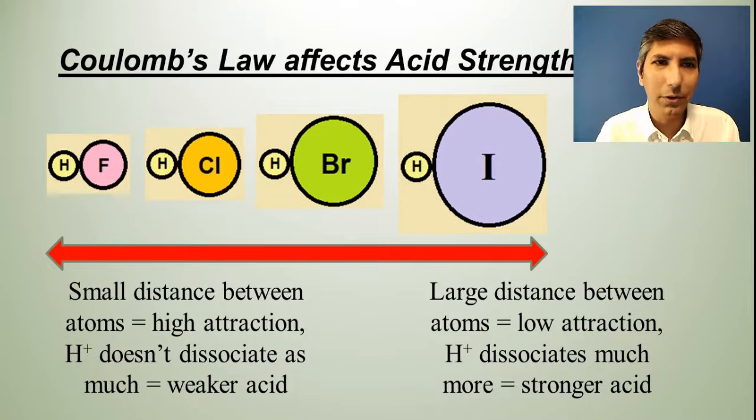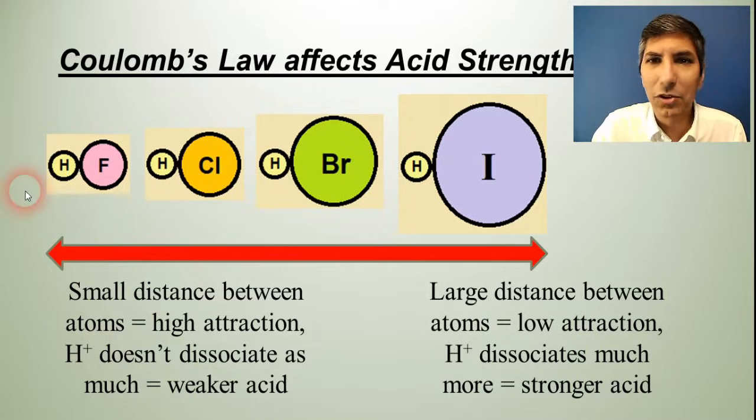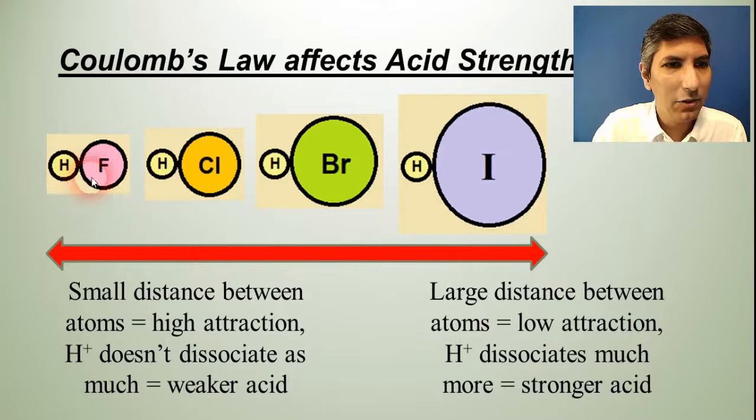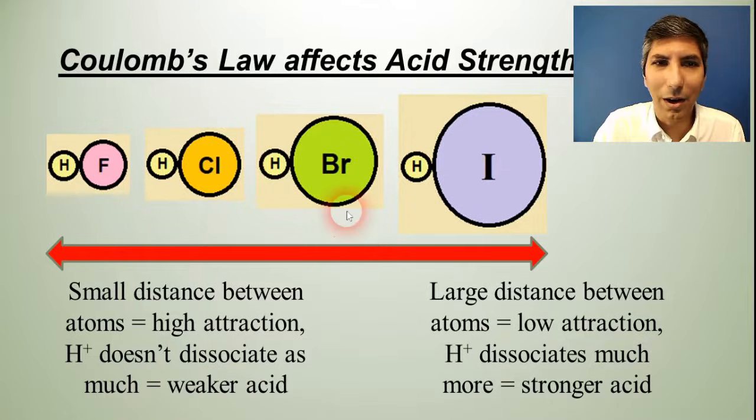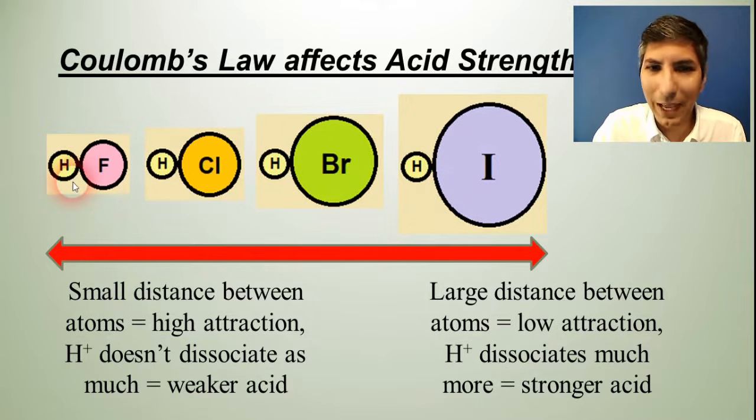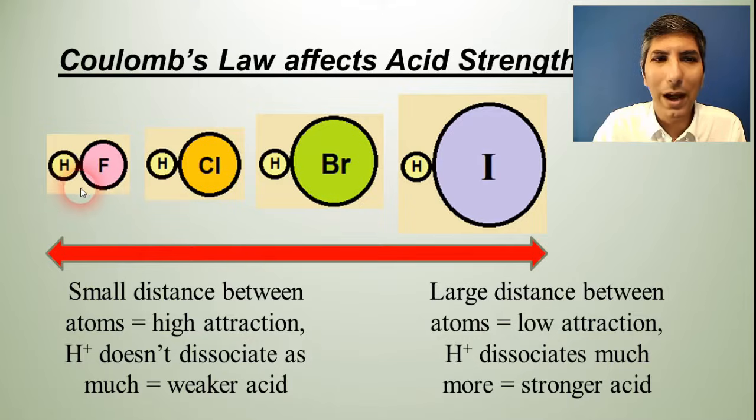One rule that helps us with this is Coulomb's Law. Now, I know we've talked about Coulomb's Law quite a bit already in this course, but this actually does help us here. You might notice that here I have the hydrogen halides. We have HF, HCl, HBr, and HI, and you might understand already that three of these are strong acids - HCl, HBr, and HI. But for some reason HF is not a strong acid, it is a weak acid. And why is that? Well, it has to do with Coulomb's Law.